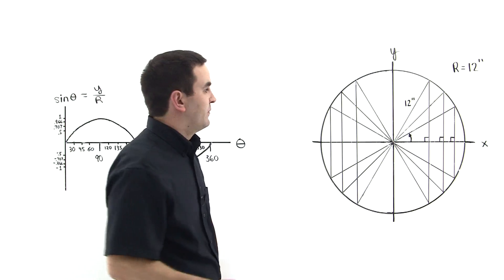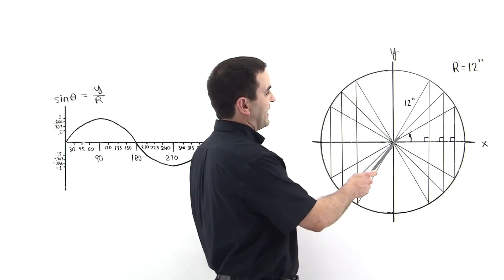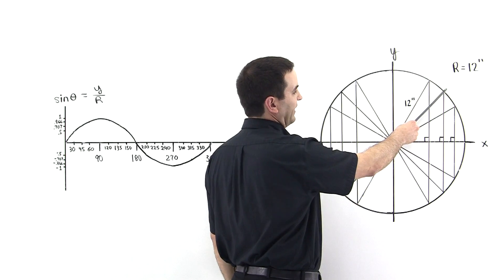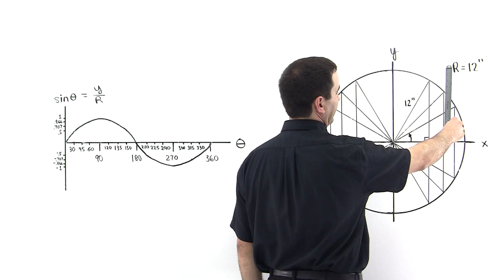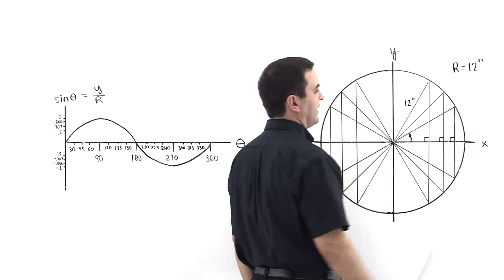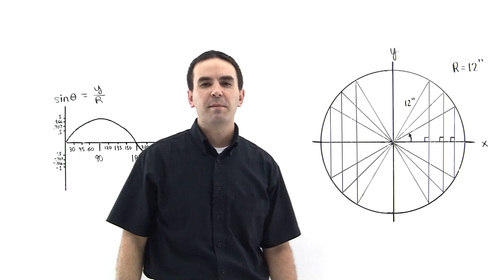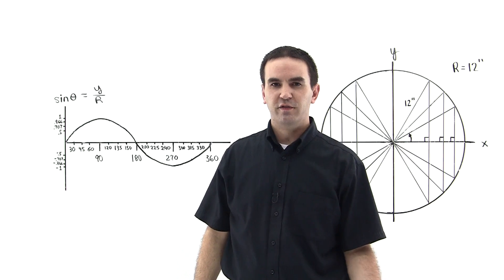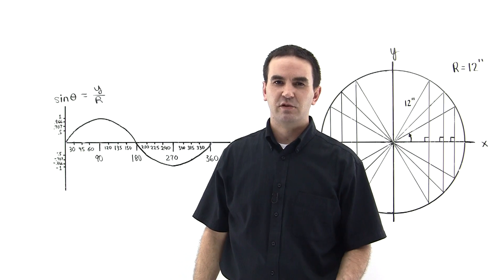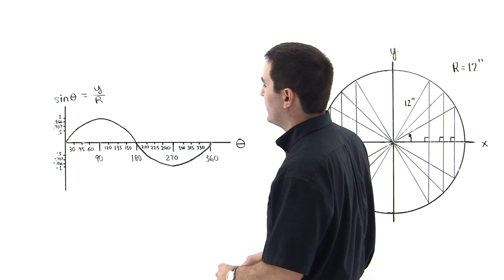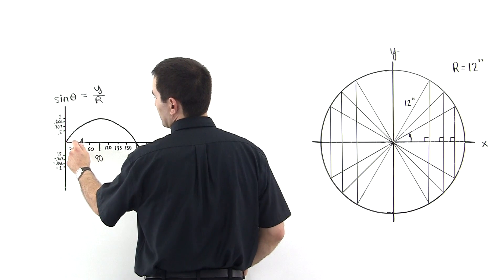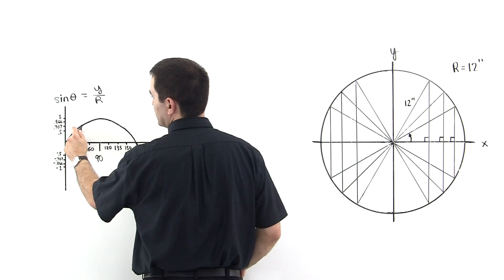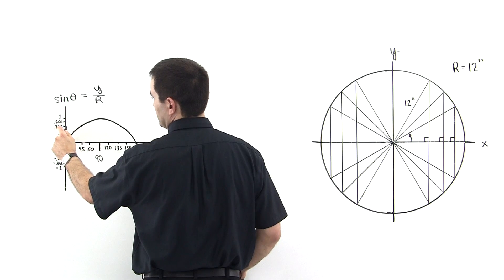Let's do it for the next one. This triangle has an angle of 45 degrees relative to the x-axis. We measure the height and it is 8.48 inches. So 8.48 divided by 12 is equal to 0.707. We come over to 45 degrees on the graph, and lo and behold, it has a y value of 0.707.